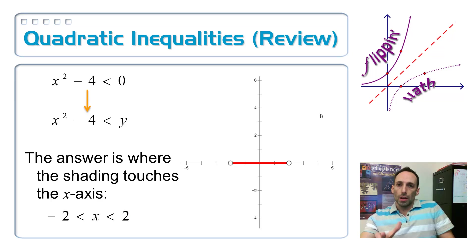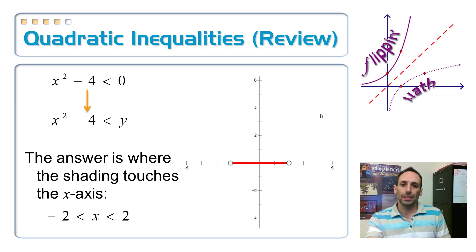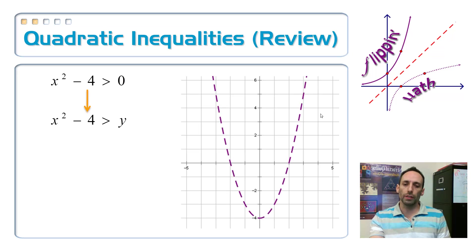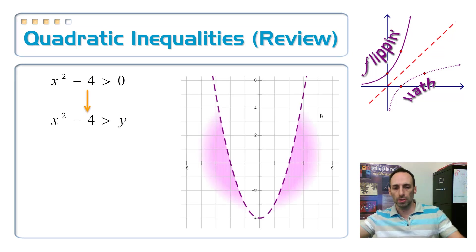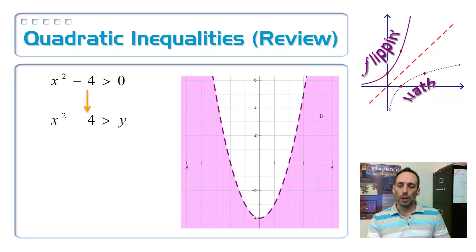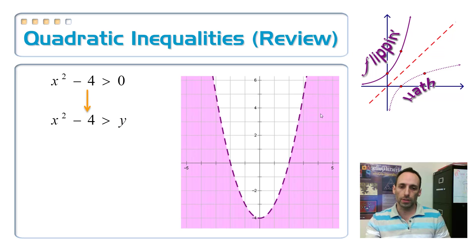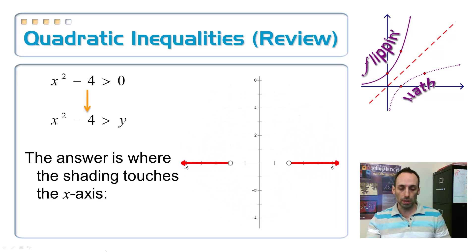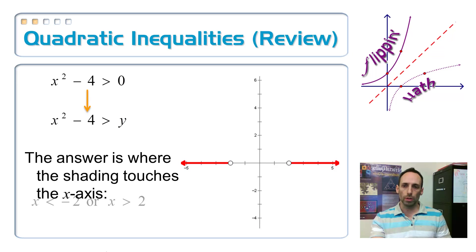Now we're going to do all of that with rational inequalities. If the inequality is greater than, it's shaded down below. Collapse it down to just the x-axis, and that's the part you keep. That's another interpretation of quadratic inequalities that carries over to rationals.